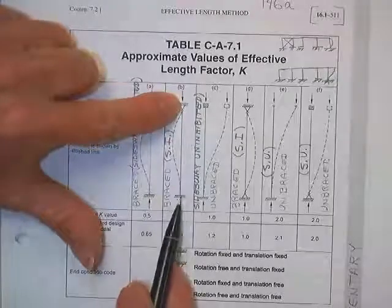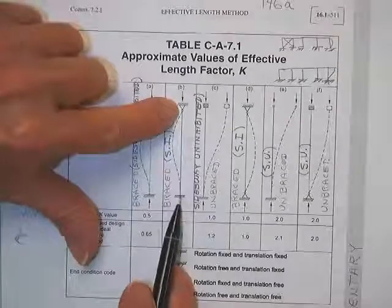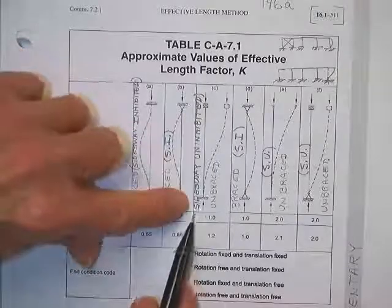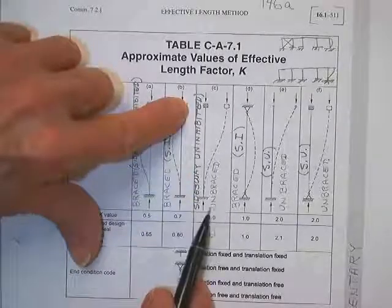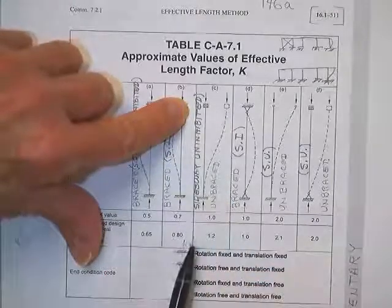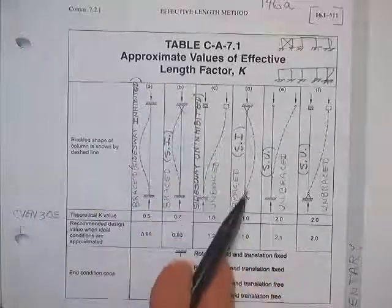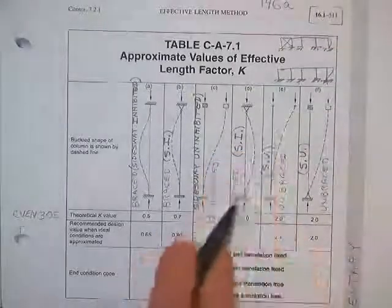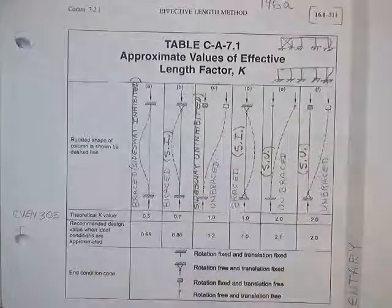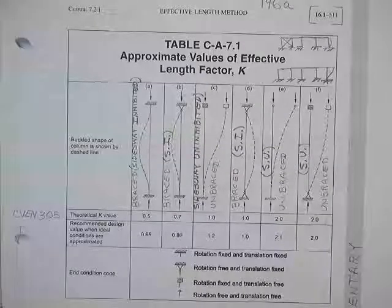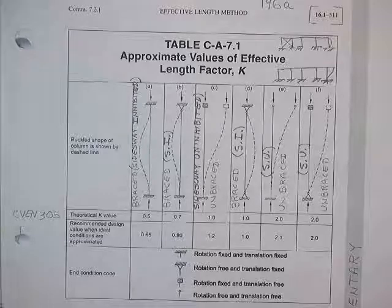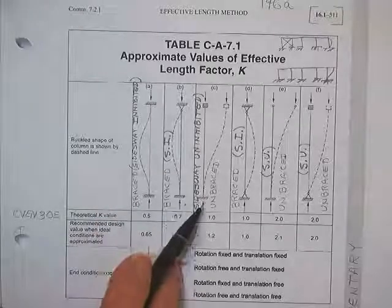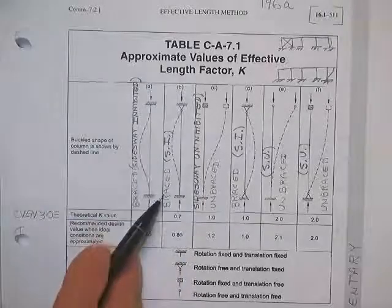Here's another braced column — it is directly above this point, sidesway not permitted, inhibited. Here's one where sidesway is uninhibited: it's an unbraced column out of an unbraced frame. Uninhibited means it's unbraced and inhibited means it's braced. You'll start seeing graphs that say 'sidesway inhibited' or 'sidesway uninhibited.'